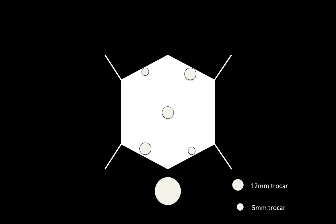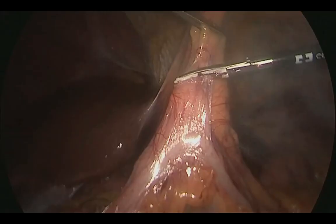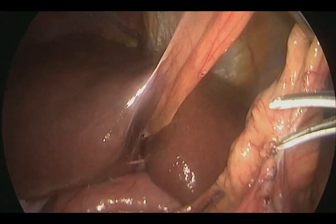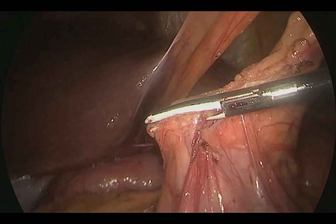The operating surgeon then moves caudally and utilises the ports placed in the right and left iliac fossa to access the transverse colon. The surgeon then proceeds to divide the gastrocolic ligament to enter the lesser sac and mobilise the transverse colon.